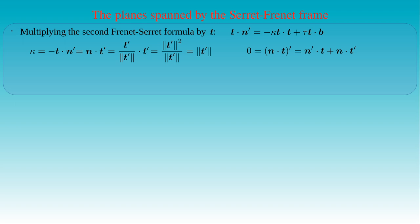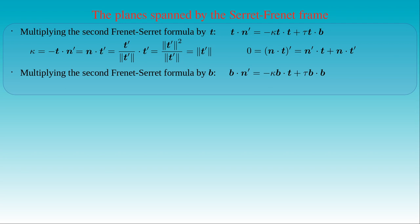We can also multiply the second Frenet-Serret formula by the binormal vector B. Here B·N' equals minus kappa times the dot product of B and T, plus tau times the dot product of B with itself. As B·T vanishes and B is a unit vector, we can write tau as the dot product of B and the derivative of N. Using the antisymmetry of the matrix a_ij with B = e3 and N = e2, this gives minus N·B' for the function tau, which is just its definition. Then we see that the second Frenet-Serret formula gives a completely consistent result.